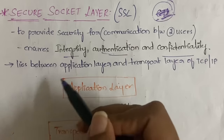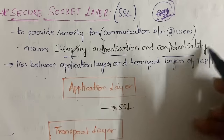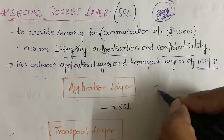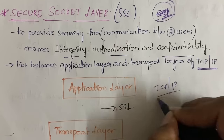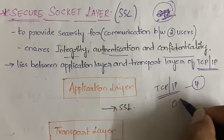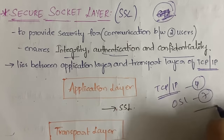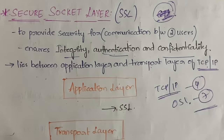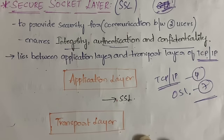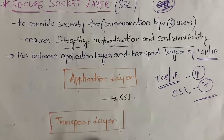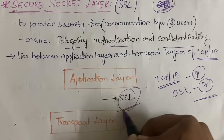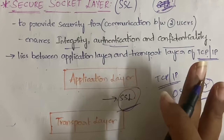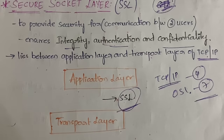SSL lies between the application layer and transport layer of the TCP/IP protocol. In TCP/IP protocol in computer networks, we have four layers, while OSI has seven layers. In the TCP/IP protocol we have the application layer and transport layer, and in between these two layers you will have the SSL protocol.